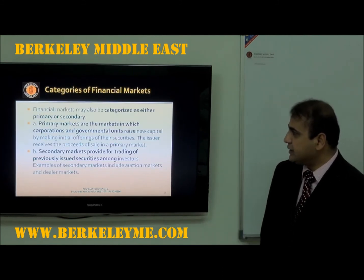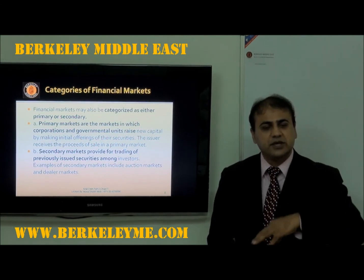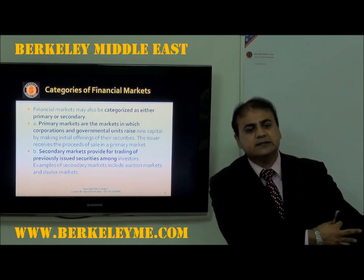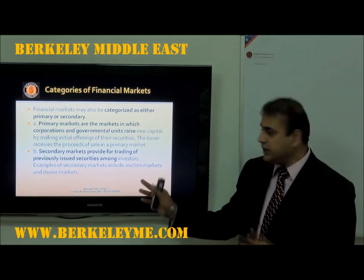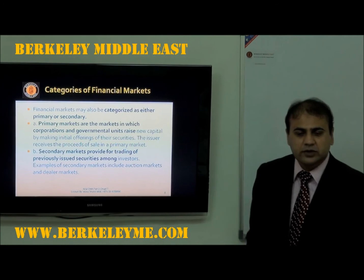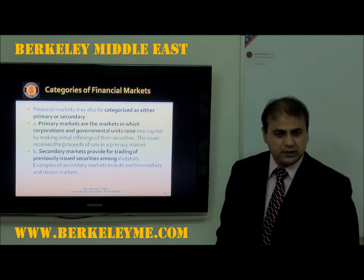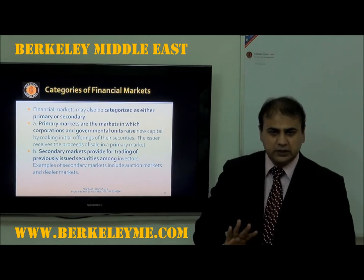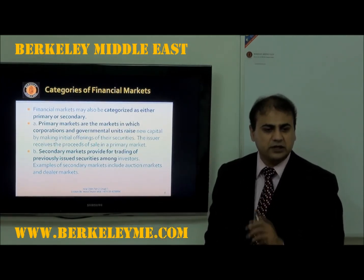Financial markets may also be categorized as primary or secondary. Primary markets are those in which shares are listed for the first time — where corporations and governmental units raise new capital. Secondary markets provide for the trading of previously issued securities, where buying and selling of already-floated share capital takes place. When you want to do an IPO — initial public offering — you do it in the primary market. For all other already-floated shares, trading takes place in the secondary market.